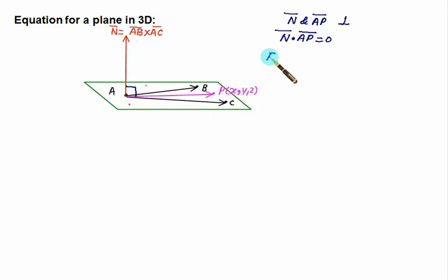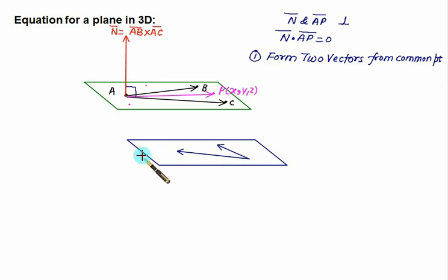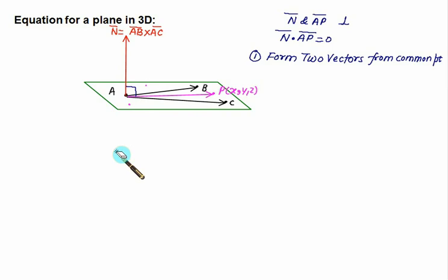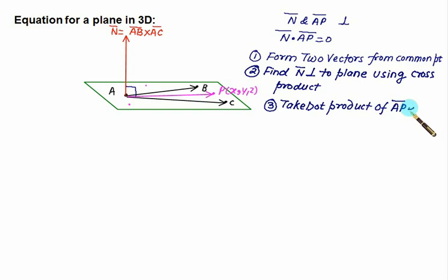The method has three steps. Step one: form two vectors from a common point. You can choose any of A, B, or C as the common point and form two vectors from it — for example AB and AC, or CA and CB, or BA and BC. Step two: find the normal vector n̄ perpendicular to the plane using the cross product of the two vectors formed in step one. Step three: since the dot product of two perpendicular vectors is zero, take the dot product of AP and n̄ and set it equal to zero.